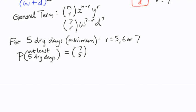So our general term will look like this. It'll be 7 choose 5, W to the 2, and D to the 5, and for, plus, 7 choose 6, W, which is 7 minus 6, and then we'll get D to the 6, and then we've also got, when R is 7, 7 choose 7, and we'll just get D to the power 7.